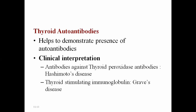The detection of thyroid autoantibodies is done to demonstrate different diseases. Presence of antibodies against thyroid peroxidase indicates Hashimoto's disease, which is related to hypothyroidism. Presence of thyroid stimulating immunoglobulins indicates Graves' disease, which is related to hyperthyroidism.